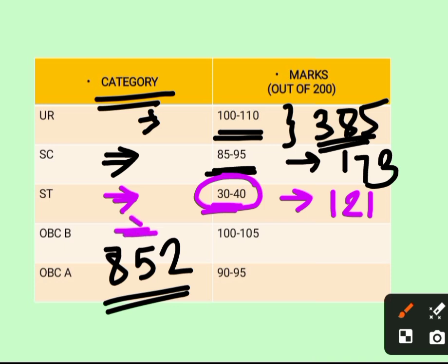For physically disabled category, the expected cutoff will be around 100 to 105 marks. The expected cutoff for OBC A is 90 to 95 marks.